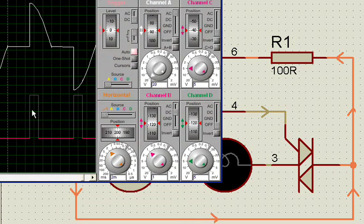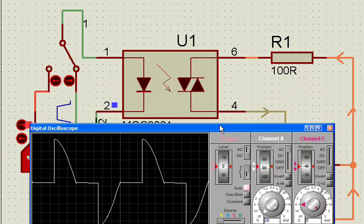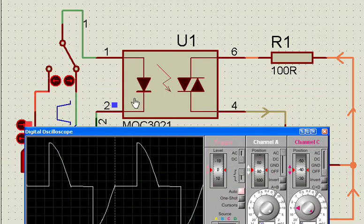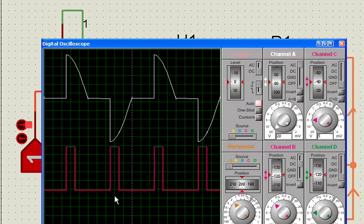Now, this is the 5-volt pulse which is coming from the LED. This opto LED is glowing only for this much of time. The opto LED is only glowing for this much of time, and this much of time it is off.